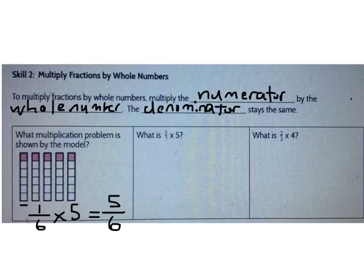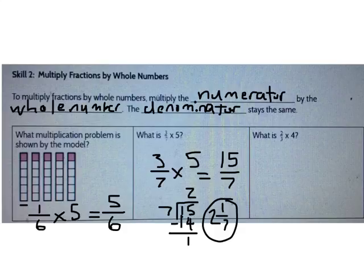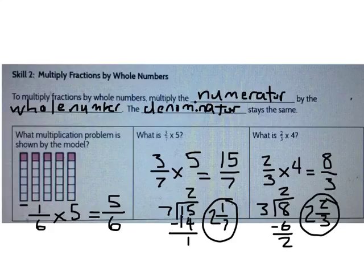Let's do another example. What is 3/7 times 5, written as an improper fraction? It's 15/7. The next thing I need to do is change that into a mixed number. Divide 15 divided by 7 and write it as a mixed number — the correct answer is 2 and 1/7. Now you try one. What is 2/3 times 4? Write your answer as a mixed number. The correct answer is 2 and 2/3. 2/3 times 4 is 8/3. When I divide to change it to a mixed number, I get 2 and 2/3.